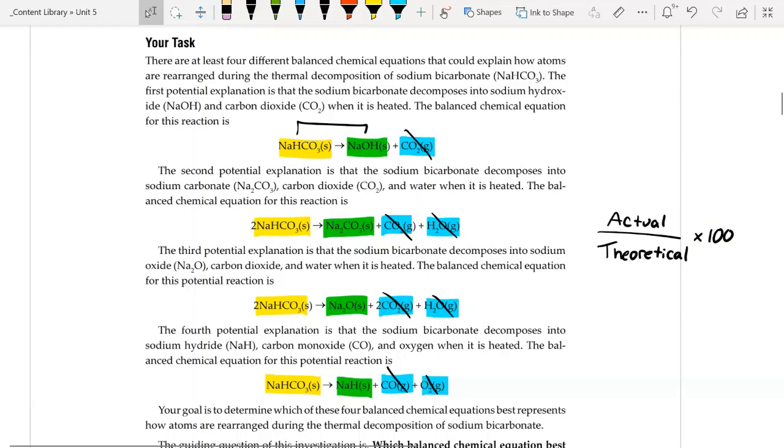And we're going to evaluate each of these four chemical reactions using a percent yield. So we're going to take our actual over our theoretical and multiply that value by 100 and that will give us our percent yield.